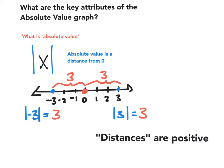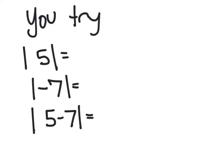Just thinking about distances being positive, you wouldn't say that you drive negative four miles to a friend's house. All right, before we move on, you try. Find the absolute value of five, negative seven, and five minus seven.